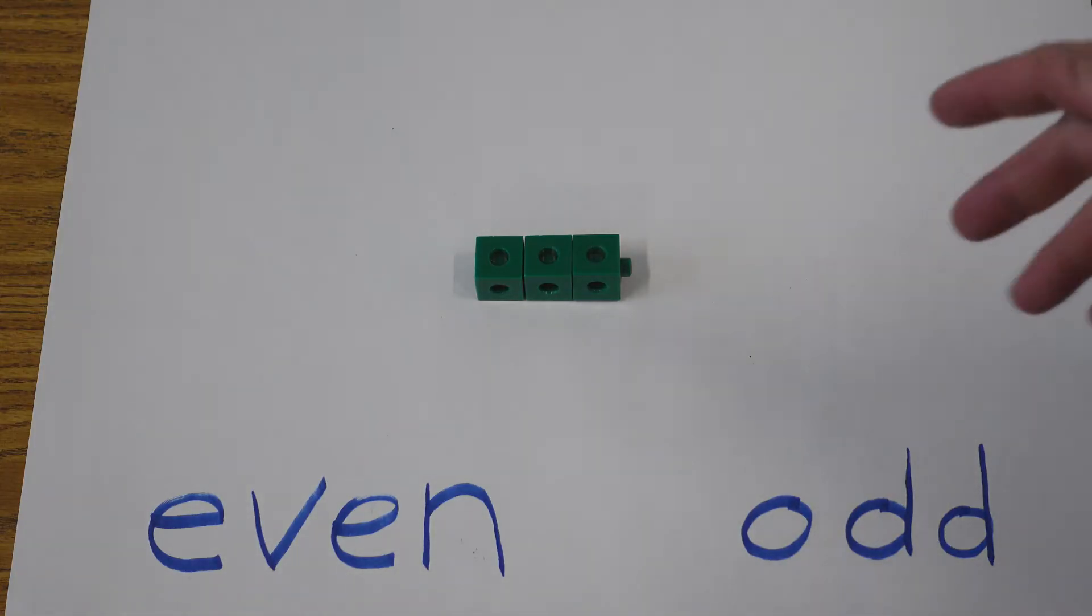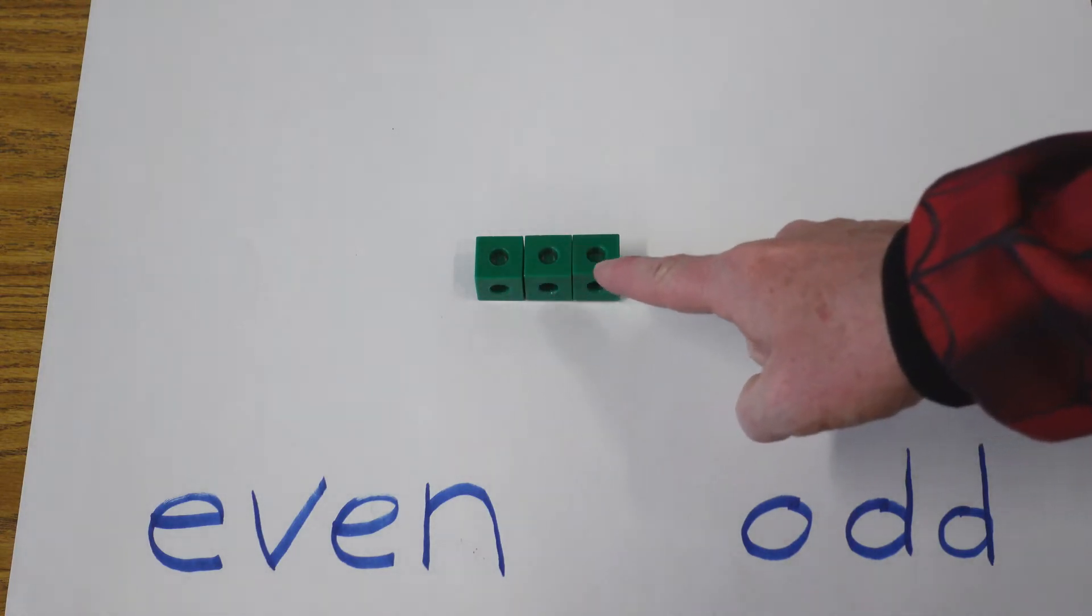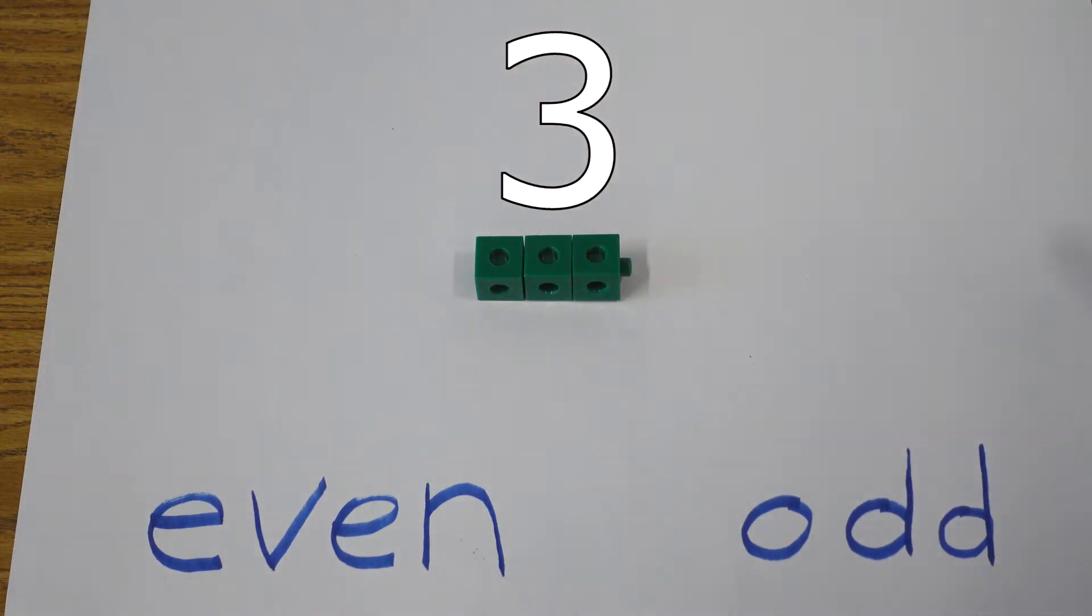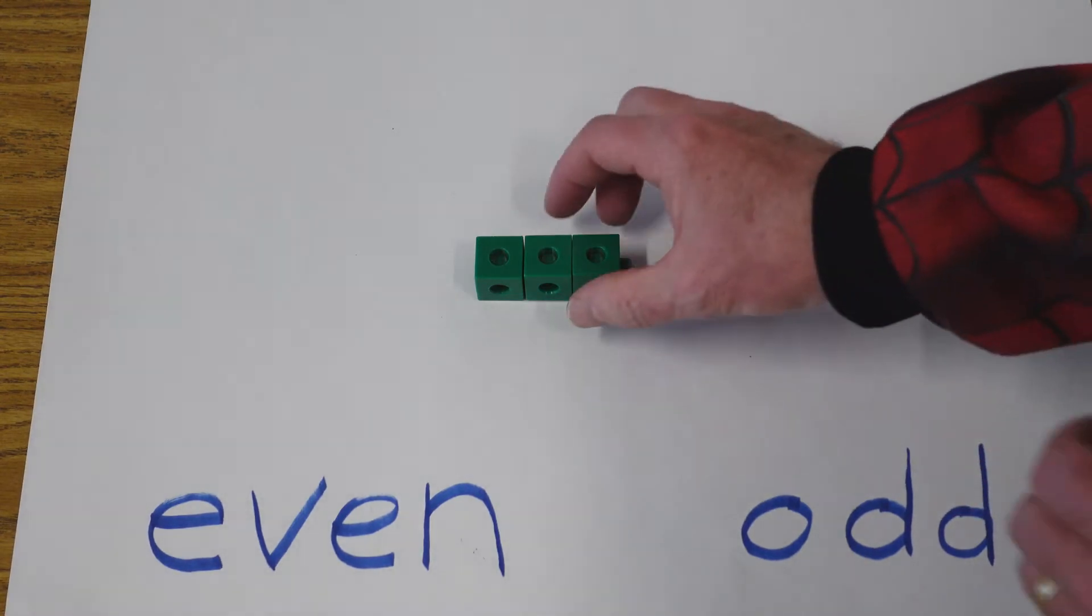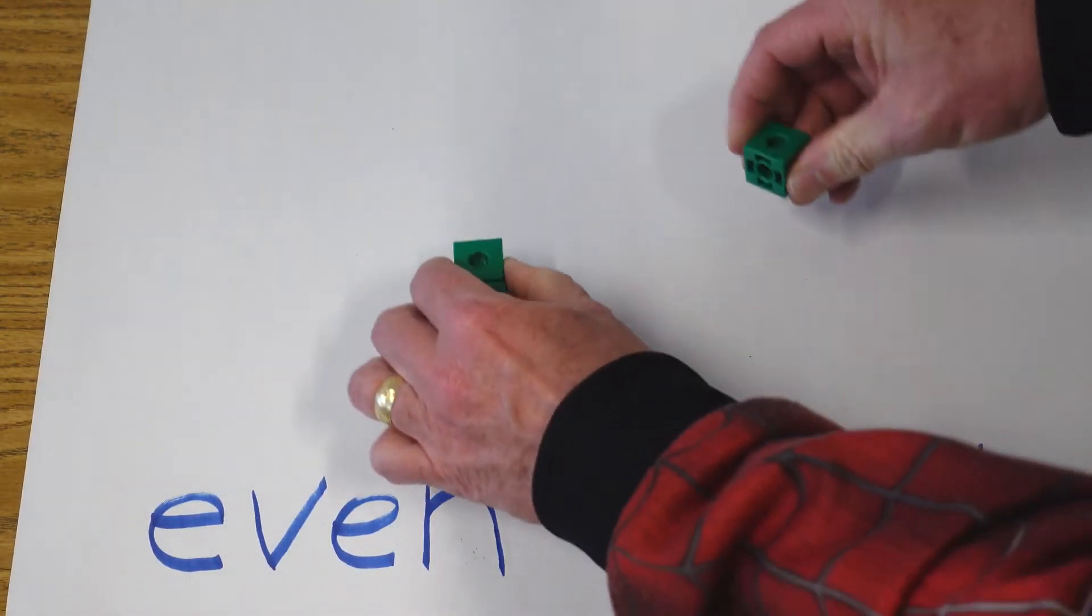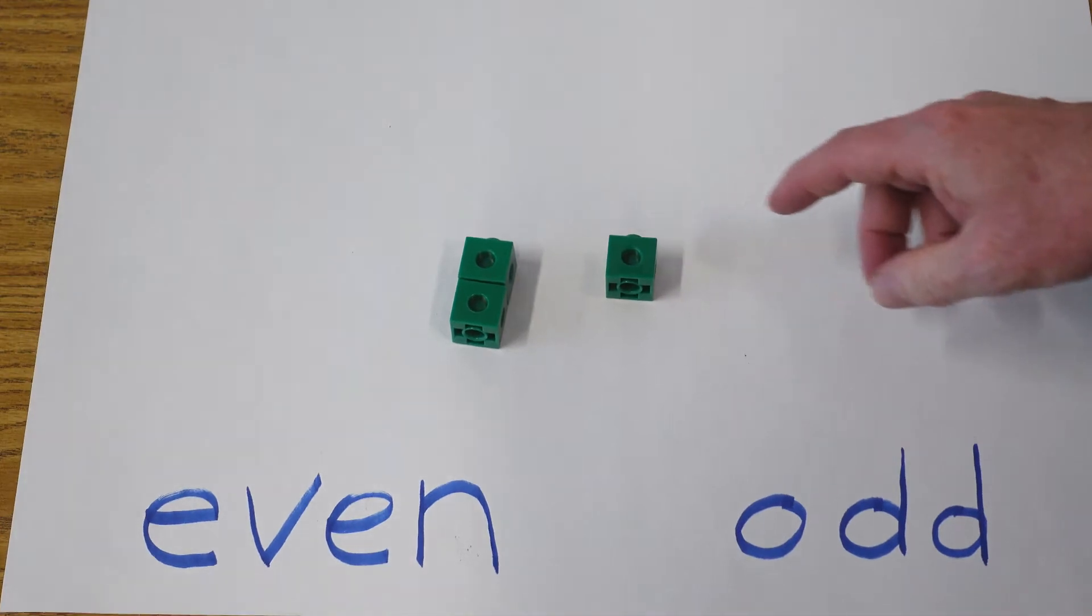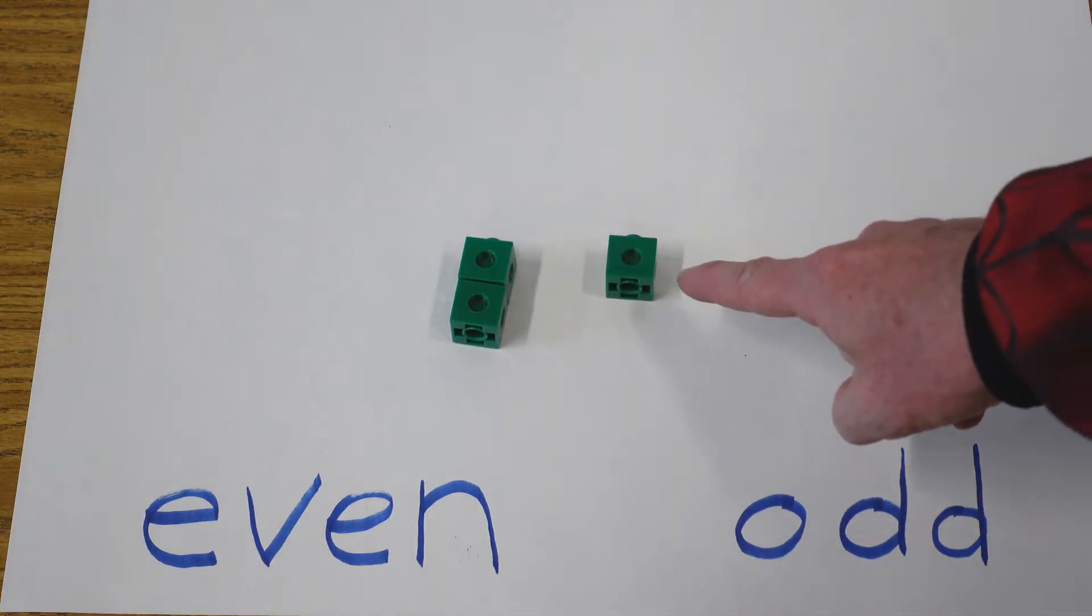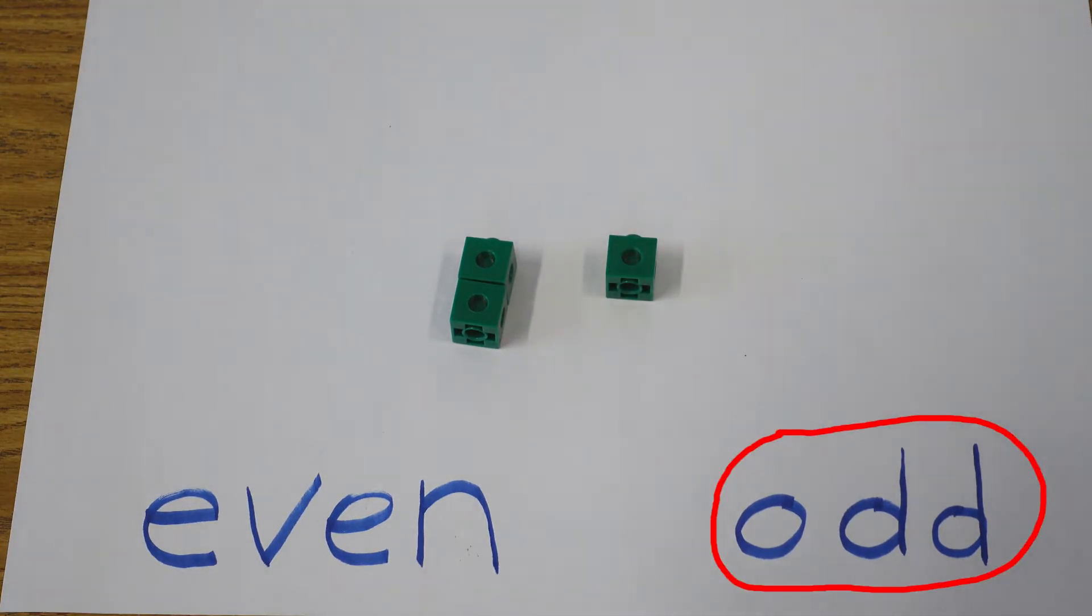Okay, what about this? How many cubes do we have? Is it even or odd? We have 1, 2, 3. You're right. We have 3 cubes, that's odd. Because if we break those apart, we're going to have an odd side. There's going to be 2 here and 1 there. So that is an odd number.